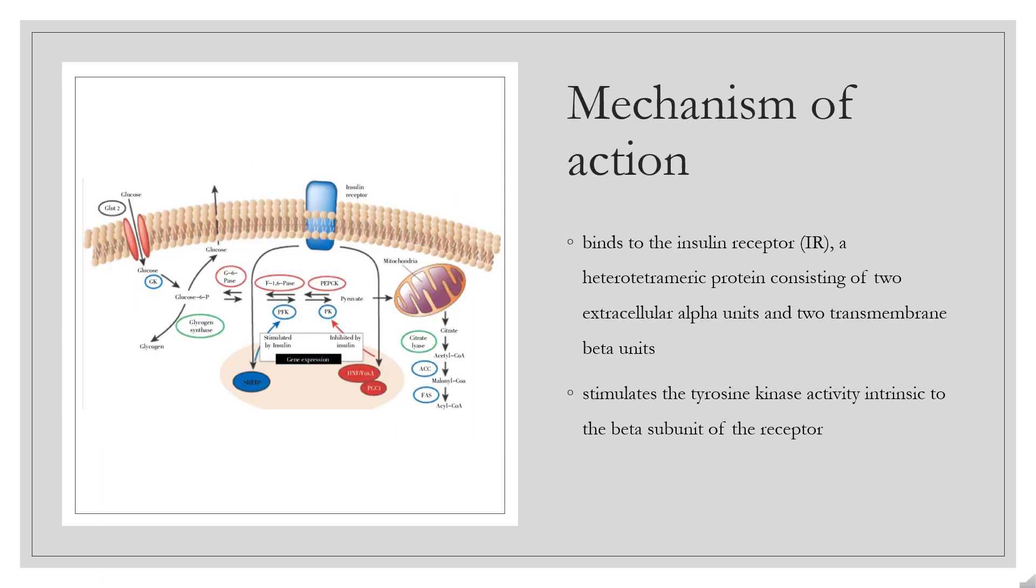Mechanism of Action: Insulin aspart binds to the insulin receptor (IR), a heterotetrameric protein consisting of two extracellular alpha units and two transmembrane beta units. The binding of insulin to the alpha subunit of IR stimulates the tyrosine kinase activity intrinsic to the beta subunit of the receptor.